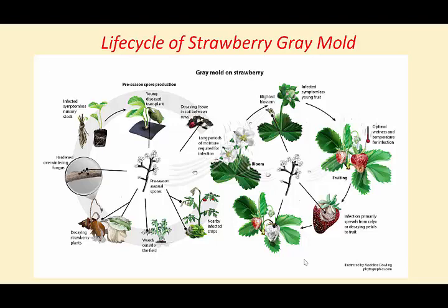The life cycle of strawberry gray mold: infection typically starts at bloom. The symptom of the infection will not show up until the ripening of the fruit. Disease infection primarily spreads from calyx or decaying petals to fruit. Pathogens can enter the field via nursery stock in the form of latent infection in crown and leaf tissues, from nearby small fruit fields such as grapes and blackberries, and from spores produced from overwintering plant debris.